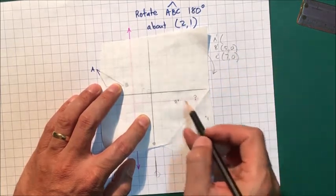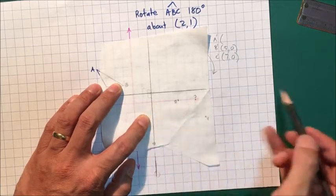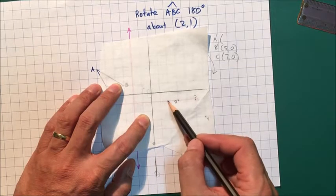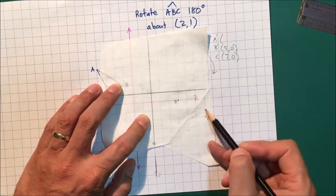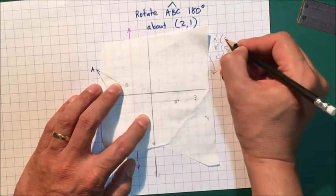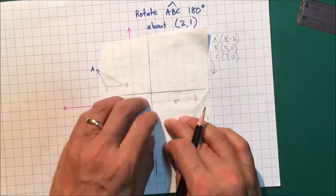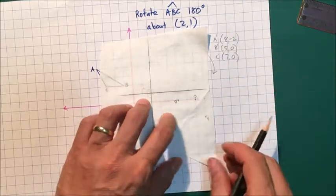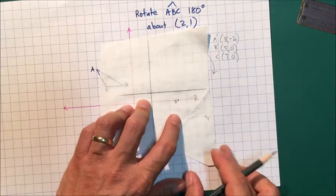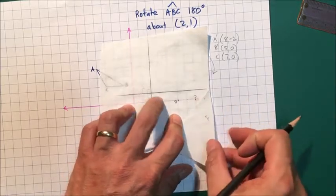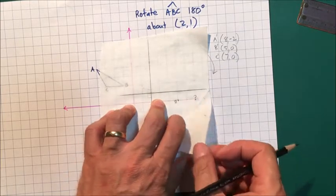And A is way over here. Actually goes beyond that original axis, but I can keep counting: 1, 2, 3, 4, 5, 6, 7, 8, and then 1, 2. So it's going to be 8, negative 2. Now I can, of course, not even worry about doing that. I can just look at where A dash is going to be, which is here, and lift this up.